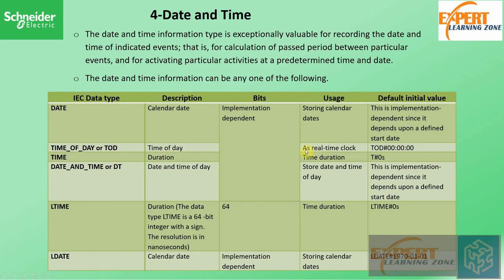The Time of Day type is used as a real-time clock; its default value is zero hours, zero minutes, zero seconds. TIME is a time duration that is implementation dependent with a default value of zero seconds. LTIME can go up to 64 bits — it is a 64-bit integer with resolution in nanoseconds, also a time duration with default value zero seconds.